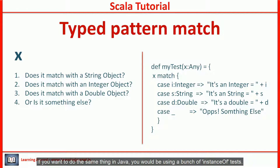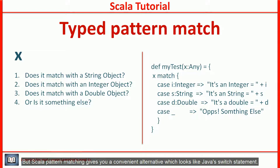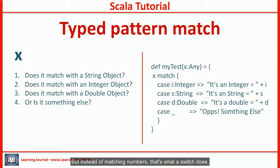We use this kind of pattern matching as a convenient replacement for type tests and type casts. If you want to do the same thing in Java, you would be using a bunch of instanceof tests, and when the test succeeds, you need to do a cast. But Scala pattern matching gives you a convenient alternative which looks like Java's switch statement, except instead of matching numbers, you are matching object types.